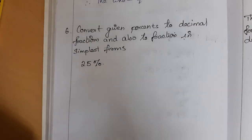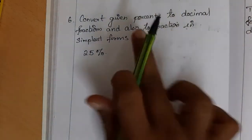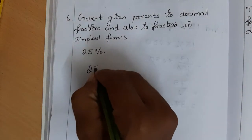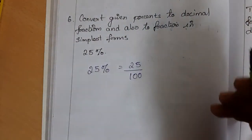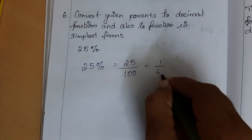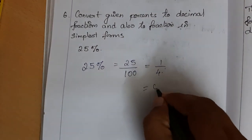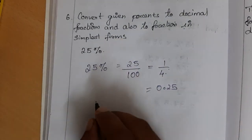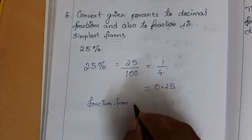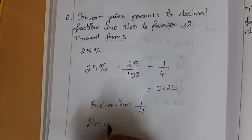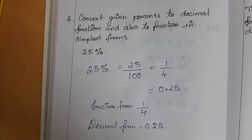Final problem: convert the given percent to decimal and to fraction in simplest form. For 25 percent: write it as 25/100 — that is the fraction form. Simplifying gives 1/4, which is the simplest fraction form. For the decimal form, 1/4 equals 0.25. So the fraction form is 1/4 and the decimal form is 0.25. Thank you.